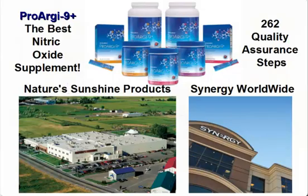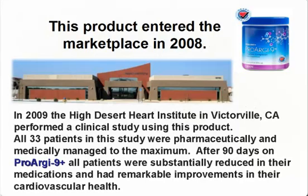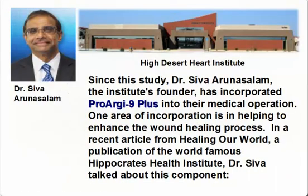There is a product that has been scientifically formulated to enhance the ability of your endothelium to create nitric oxide for enhanced circulation. It's called ProArginine Plus. This product entered the marketplace in 2008. In 2009, the High Desert Heart Institute in Victorville, California performed a clinical study using this product. All 33 patients in this study were pharmaceutically and medically managed to the maximum. After 90 days on ProArginine Plus, all patients were substantially reduced in their medications and had remarkable improvements in their cardiovascular health.